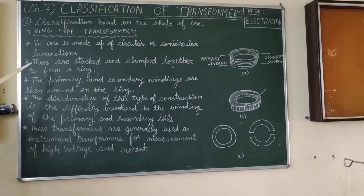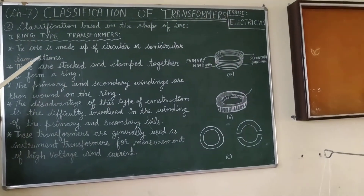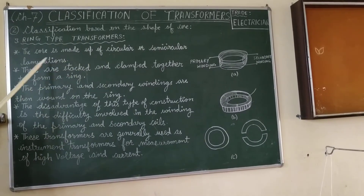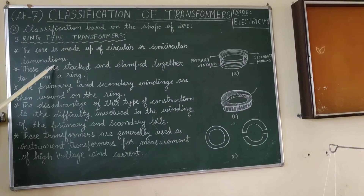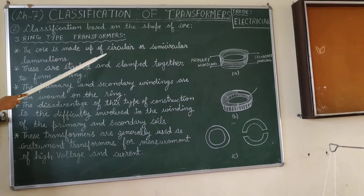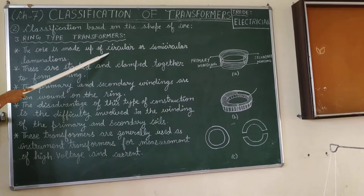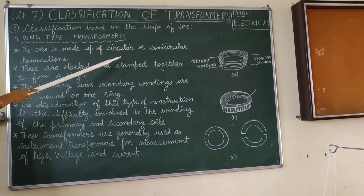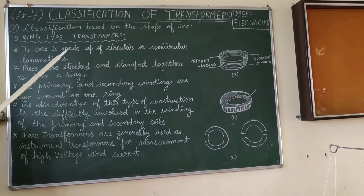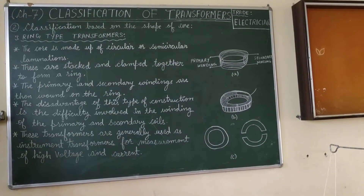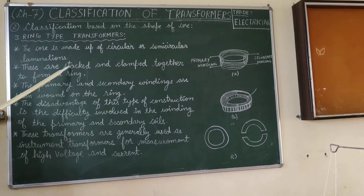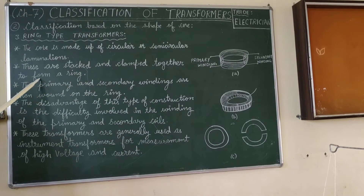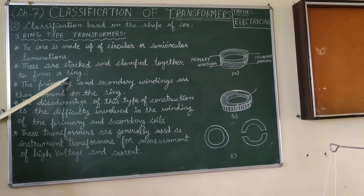This is the core of the ring type. It is called circular or semi-circular. This shape is what defines the ring type transformer core.